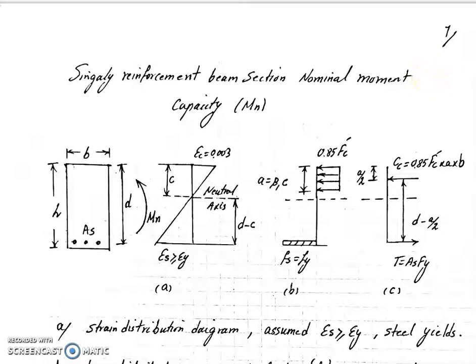Hello guys, in this video I'm going to show you how to derive the nominal moment of a singly reinforced beam section. This is our singly reinforced beam section - the height of the beam is H and the width of the beam is b. The effective depth of the beam is d, and As is the area of the steel on the beam tension zone.